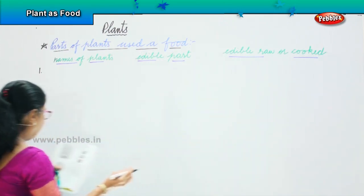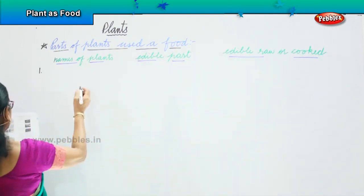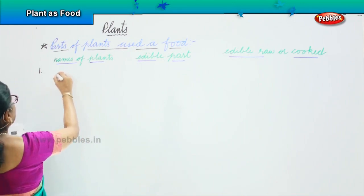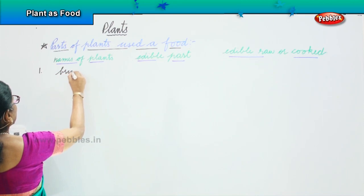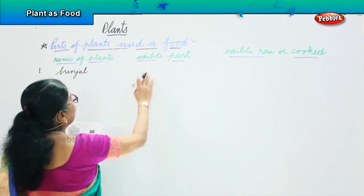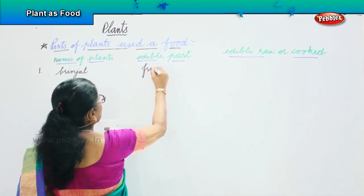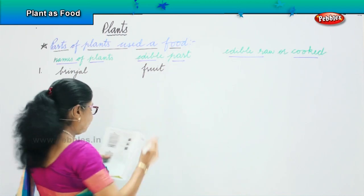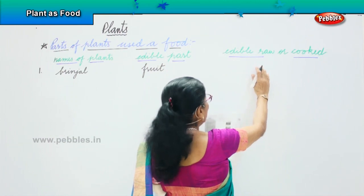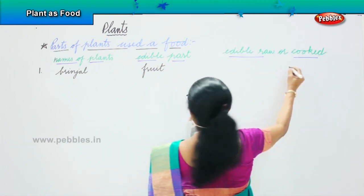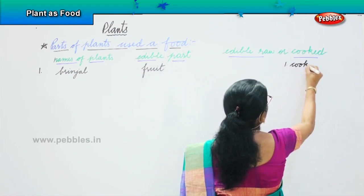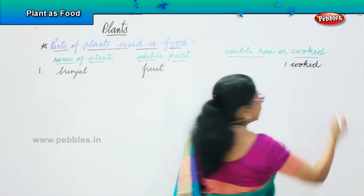Alright, number one — brinjal. The name of the plant is brinjal. Brinjal is a fruit. And how do you eat brinjal? It has to be cooked. Brinjal has to be cooked — that's the first one.